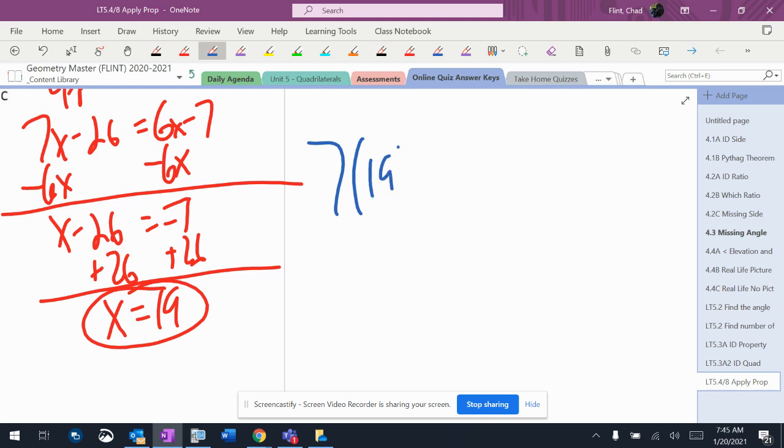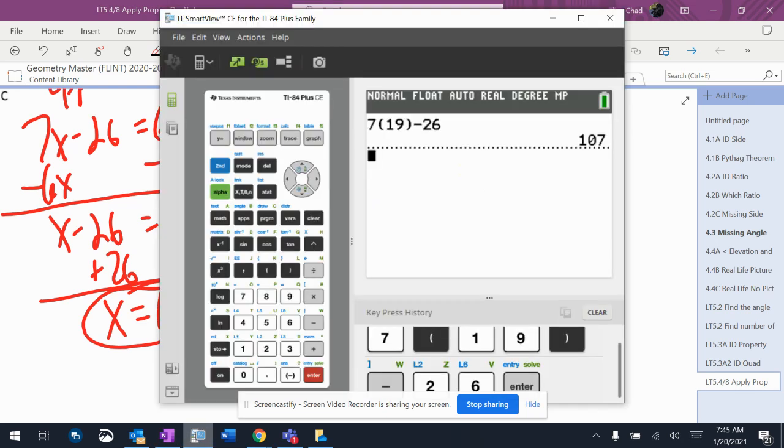So 7 times 19 minus 26. 7 times 19 minus 26, which I didn't write that clearly, but it equals 107.